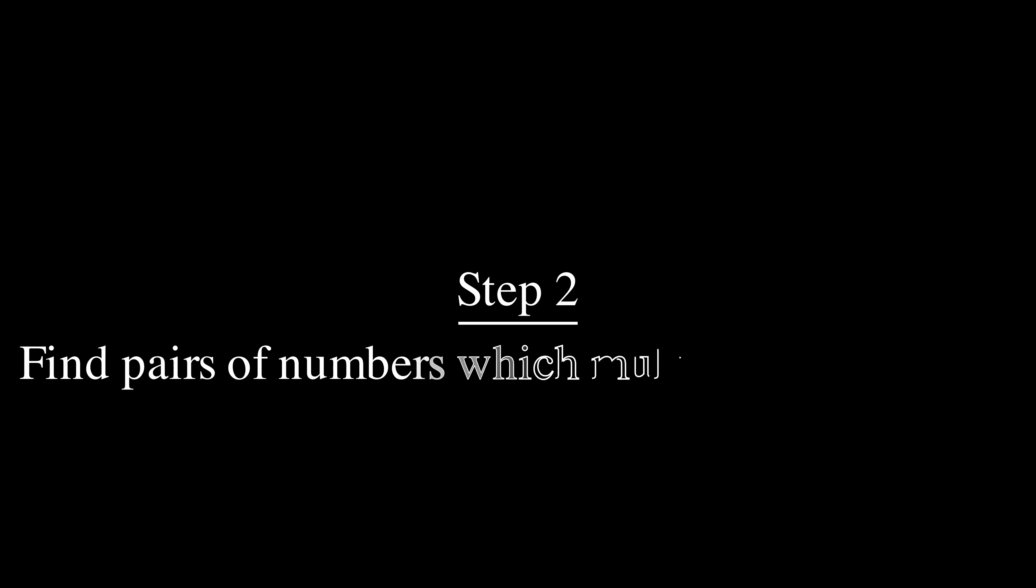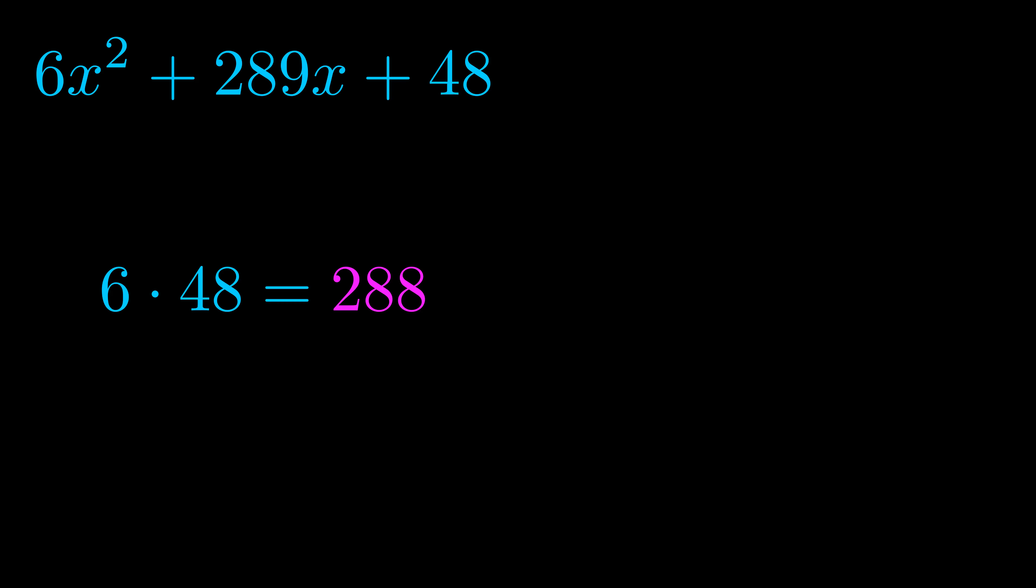Step two is to try to find all of the pairs which multiply to this number. Now it turns out you don't really need to find all of them, but go ahead and write down as many numbers as you can that multiply to the magenta value for now.